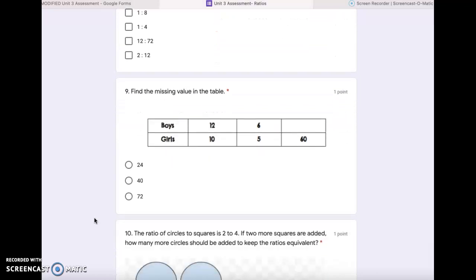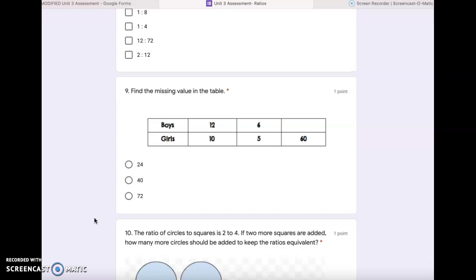Number 9. Find the missing value in the table. So the value that's missing is above the 60. You're looking for the boy number. Your choices are 24, 40, or 72.